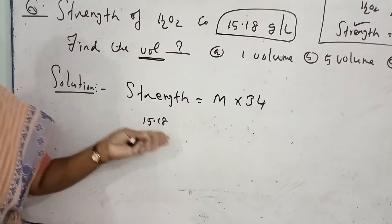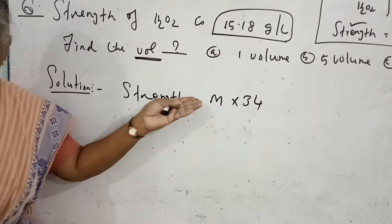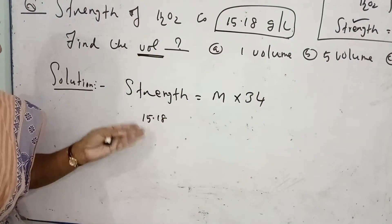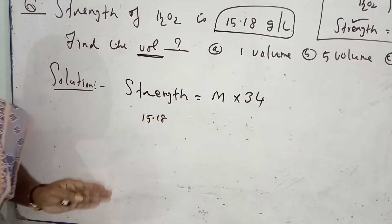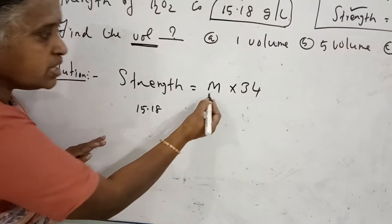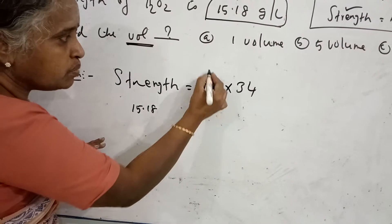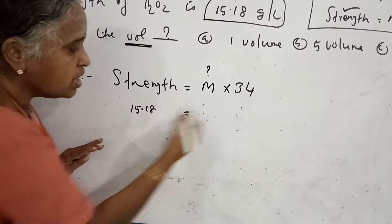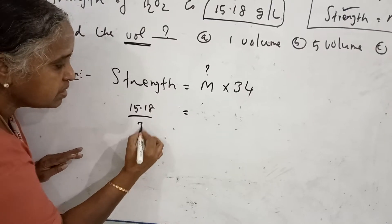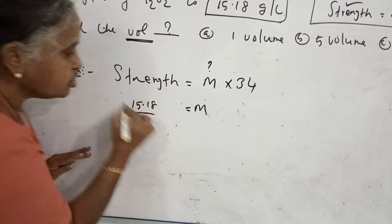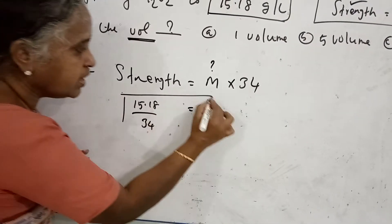The formula is: Strength is equal to molarity multiplied by 34. Strength is 15.19 grams per liter, and you want the molarity. Keep it as it is, bring the 34 to the other side, and this gives you the molarity.